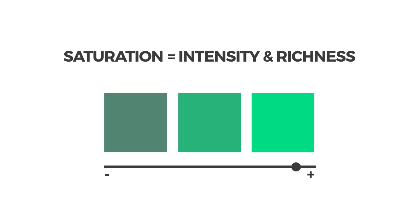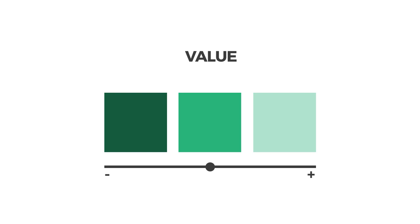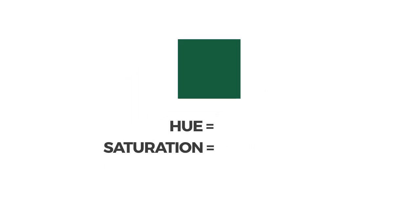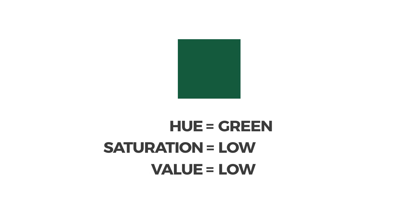Do you want super saturated Kermit the Frog green or a less saturated Squidward green? Value describes the darkness of a color — a darker color has a lower value. Take this color. How would you describe its hue, saturation, and value? If you said it's a green hue with low saturation and low value, you are absolutely correct.